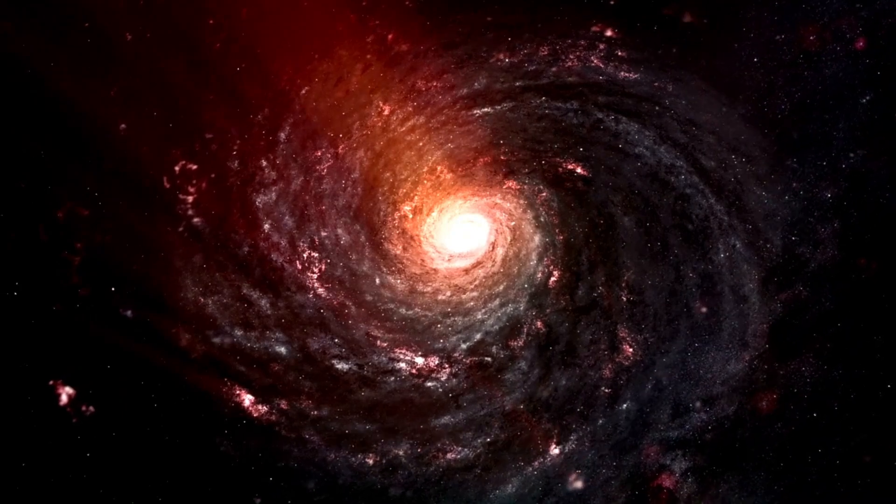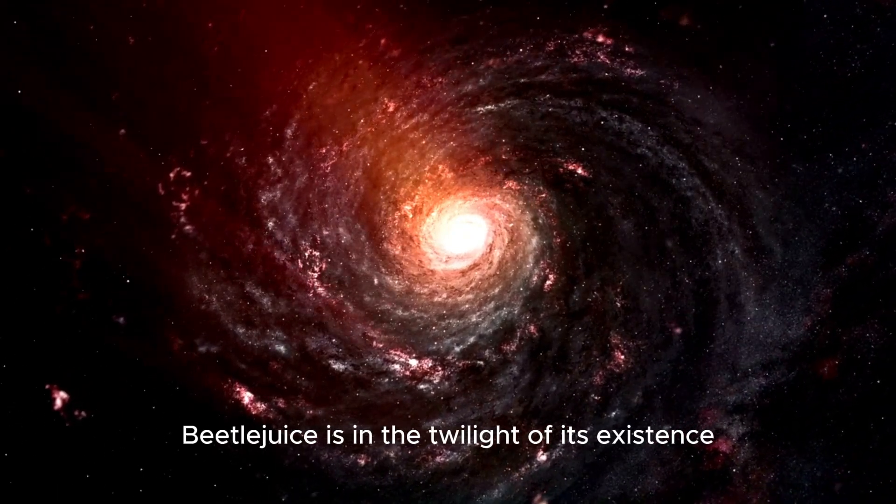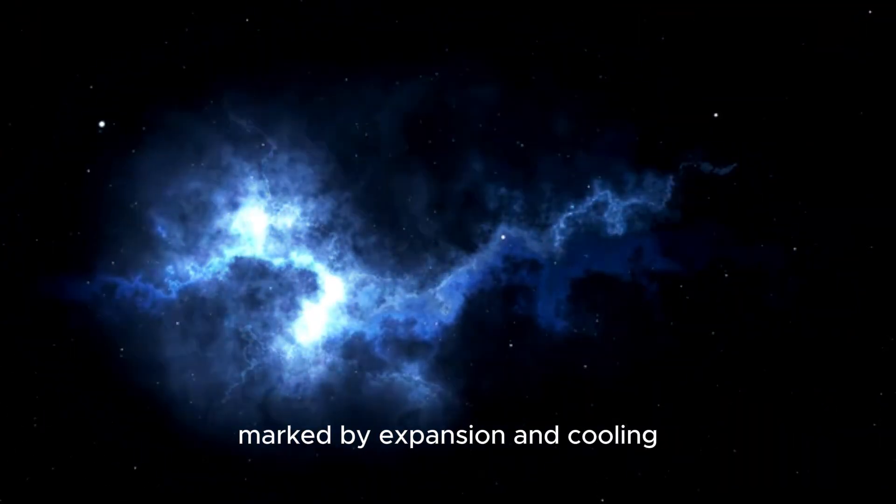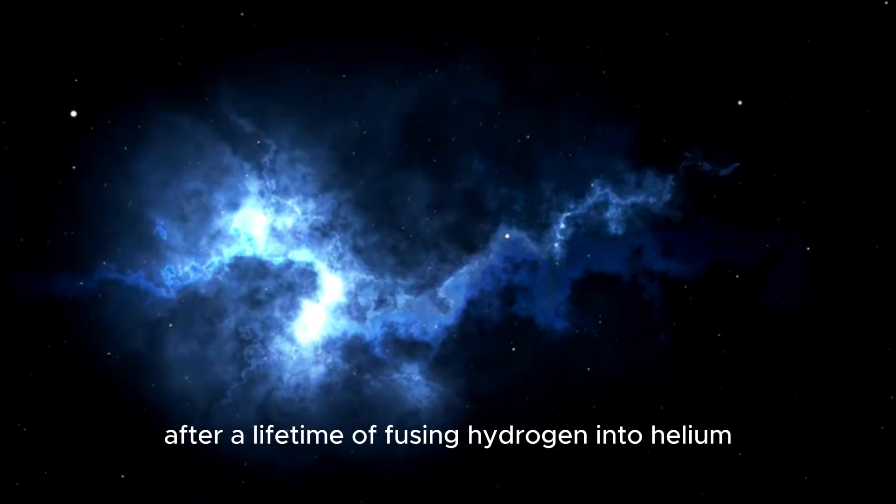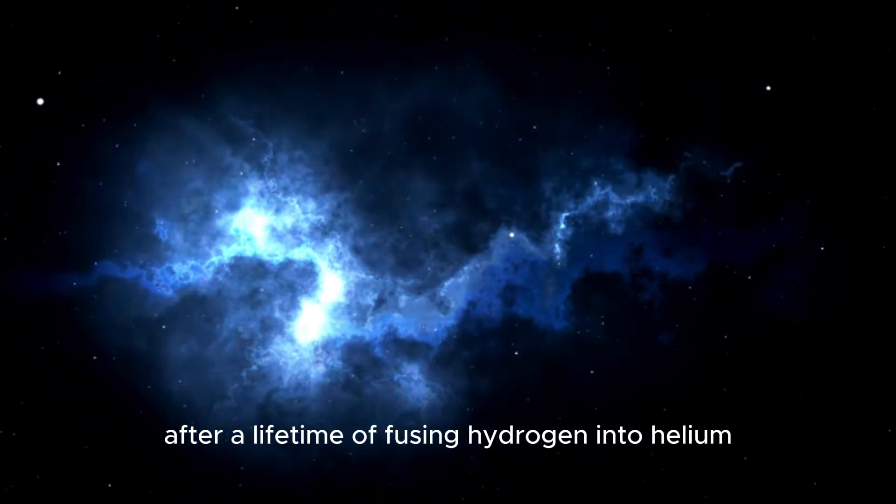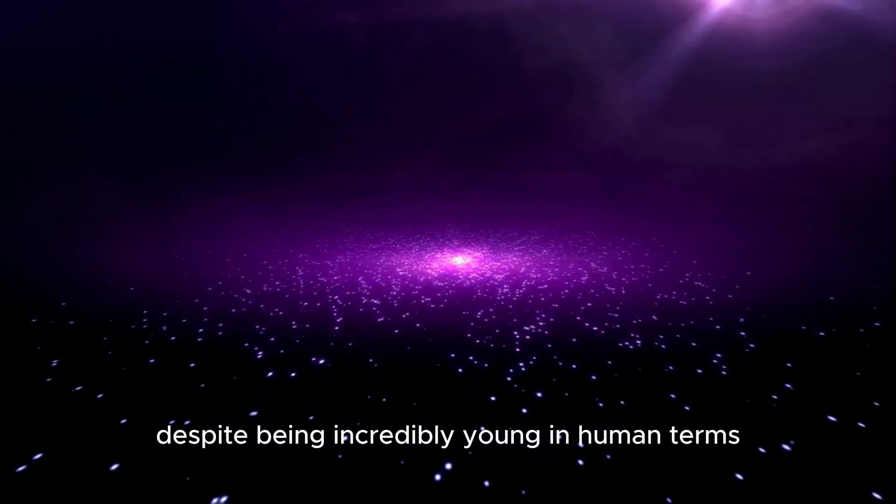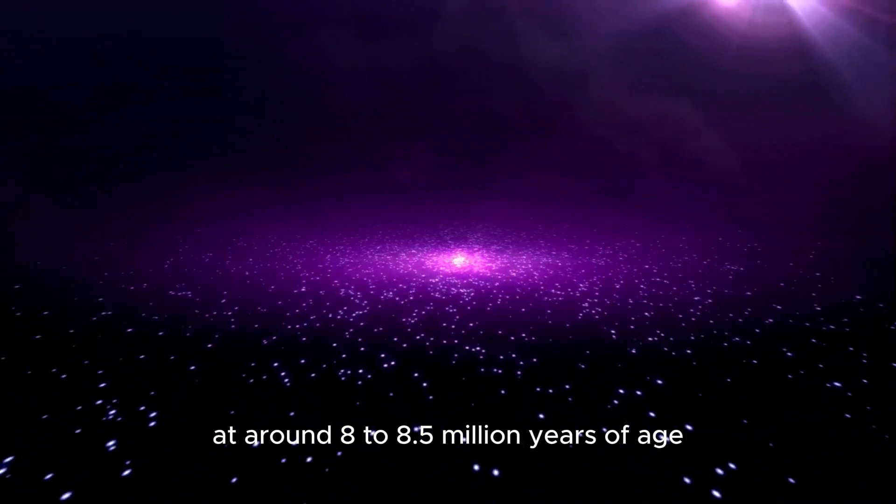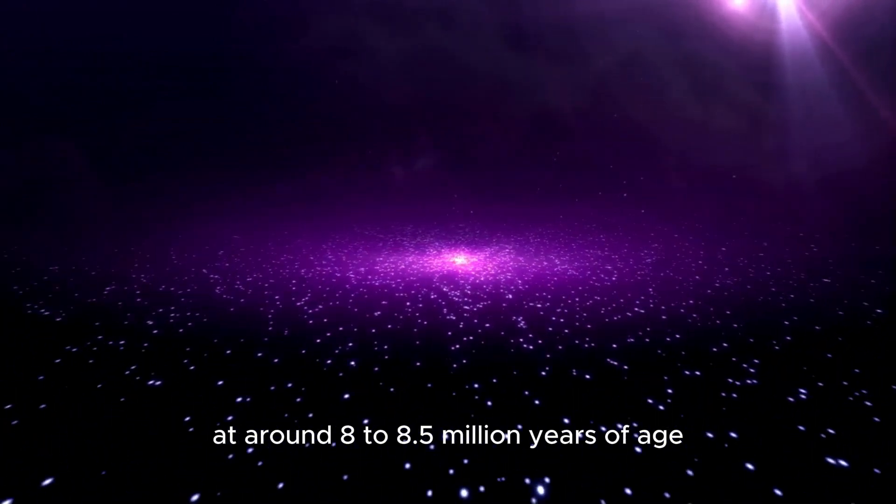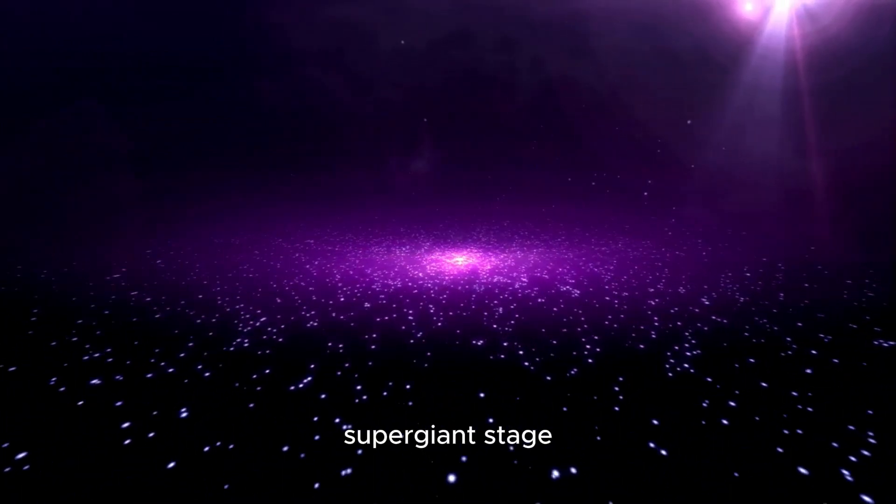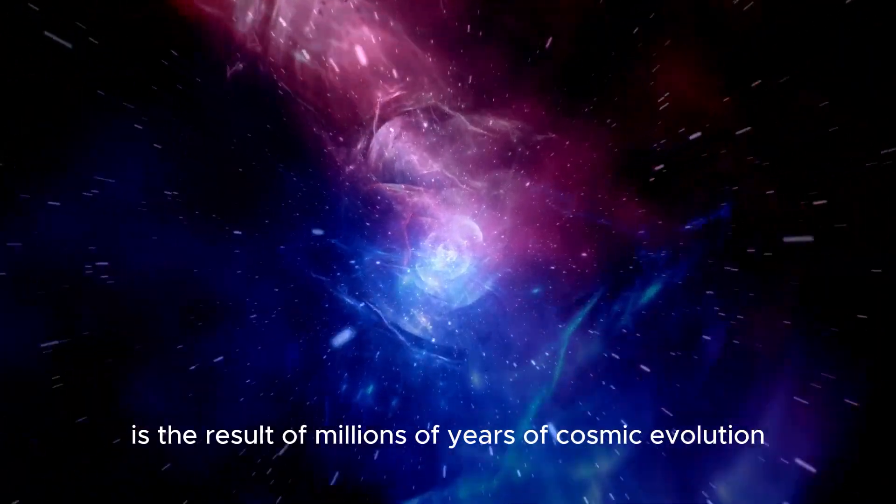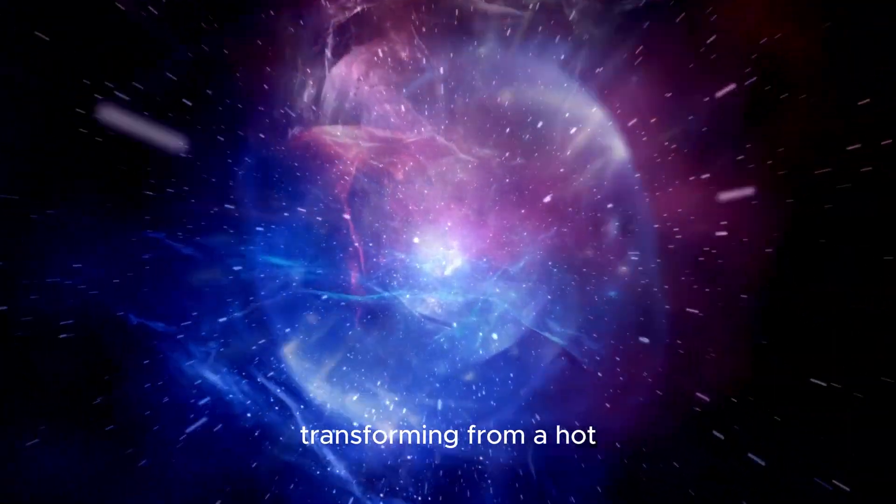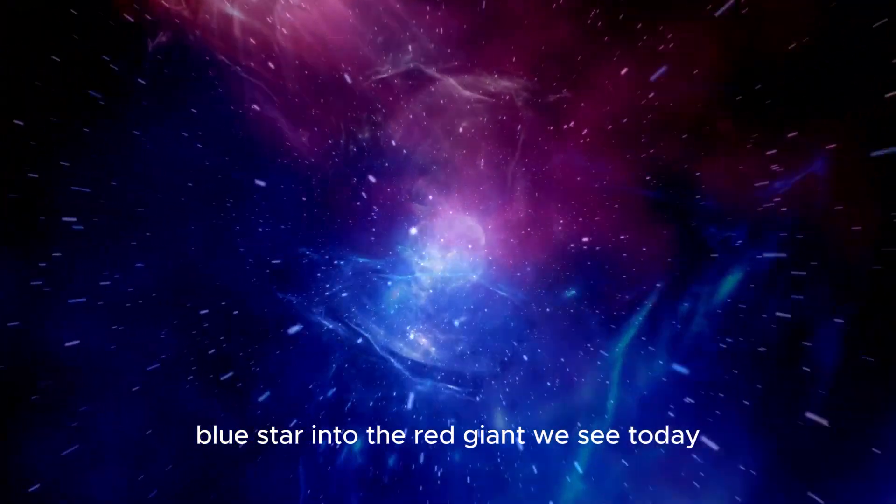As a red supergiant, Betelgeuse is in the twilight of its existence, marked by expansion and cooling after a lifetime of fusing hydrogen into helium in its core. Despite being incredibly young in human terms at around 8 to 8.5 million years of age, Betelgeuse's current red supergiant stage is the result of millions of years of cosmic evolution, transforming from a hot blue star into the red giant we see today.